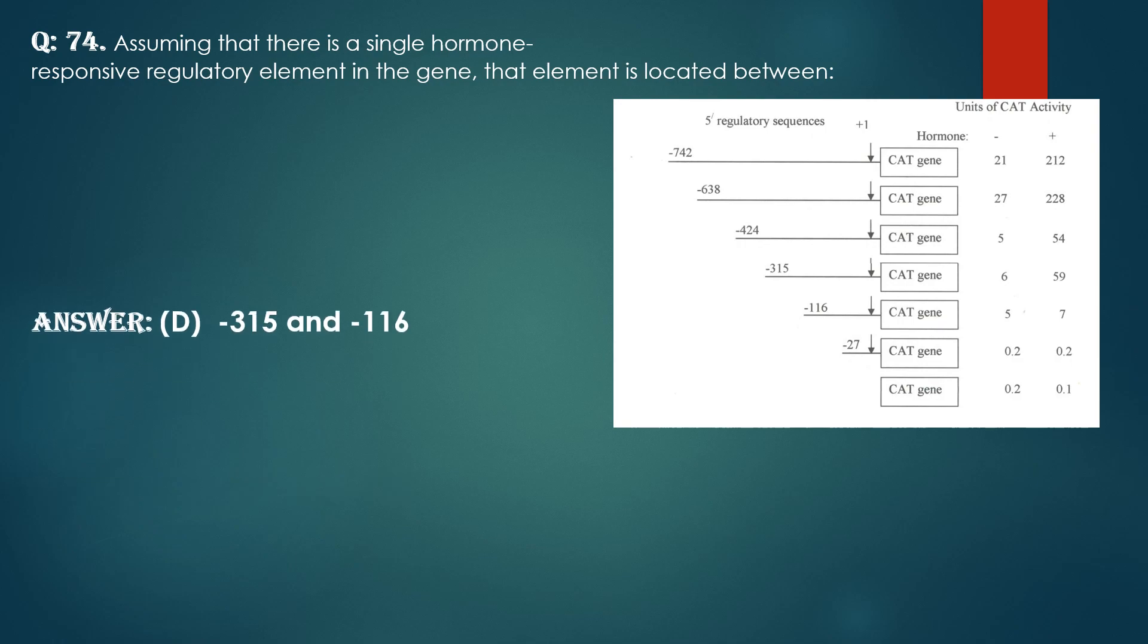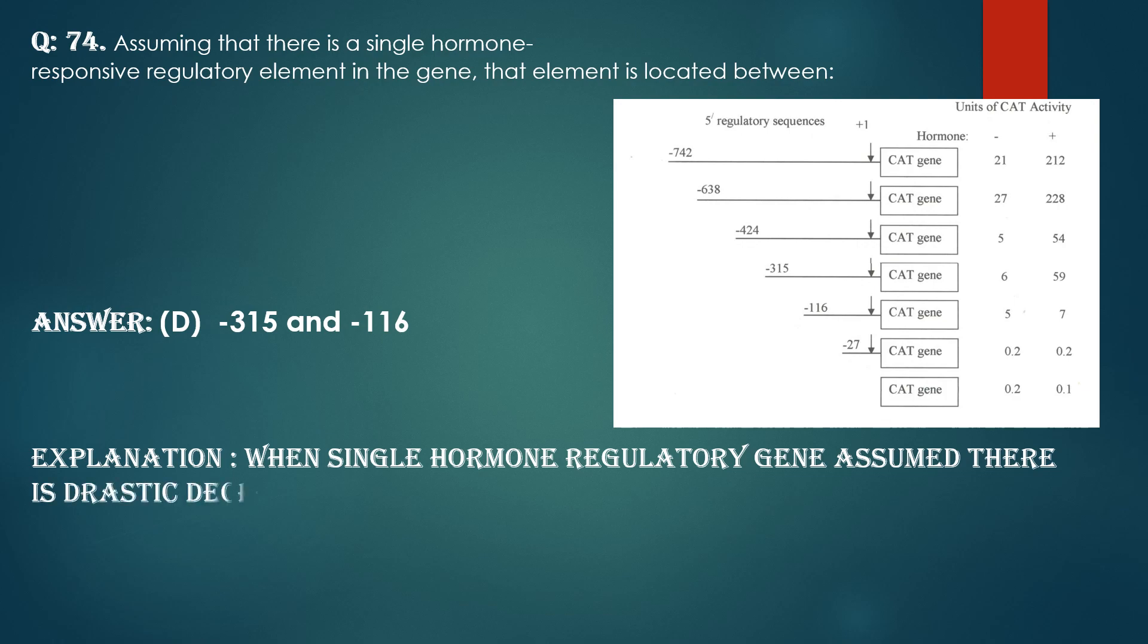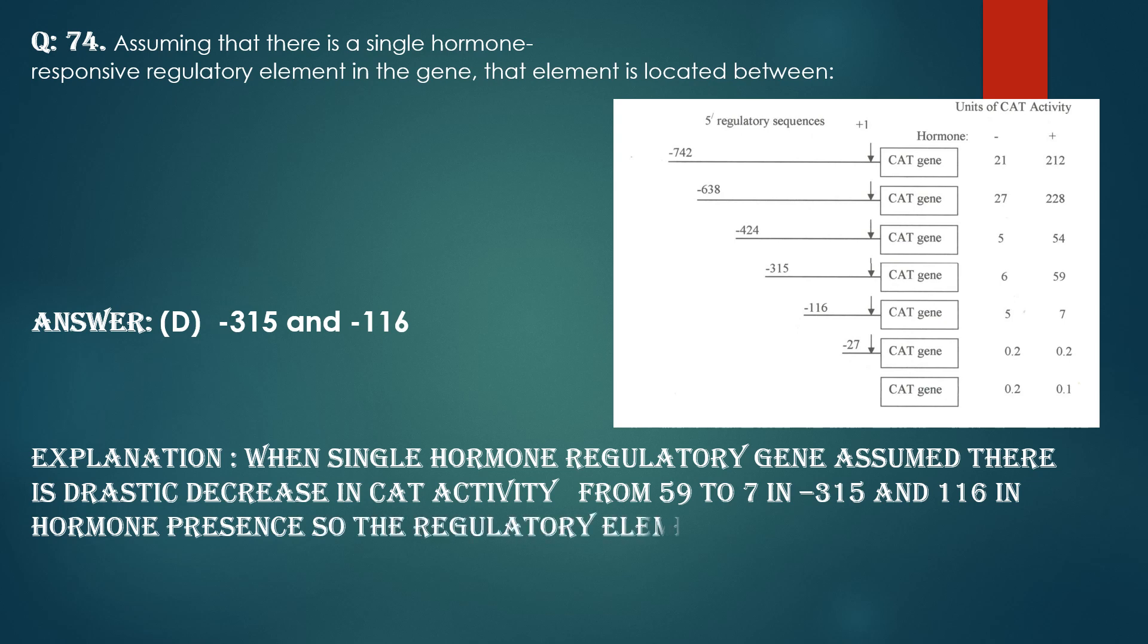Answer is 315 and 116. Explanation: When single hormone regulatory gene assumed, there is drastic decrease in CAT activity from 59 to 7 in 315 and 116 in hormone presence, 59 to 7.